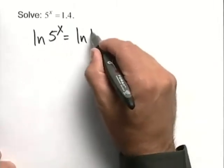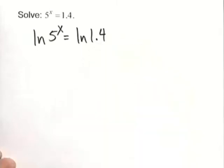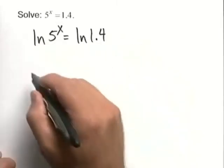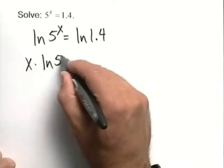As before, what you do to one side, you also do to the other. This now allows us to roll our variable x out in front of the natural log of 5.